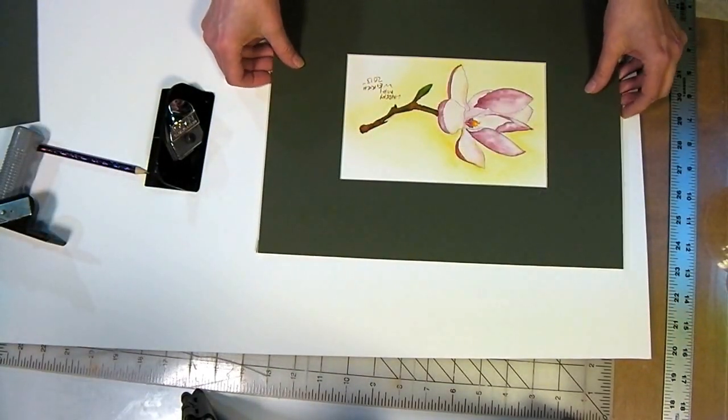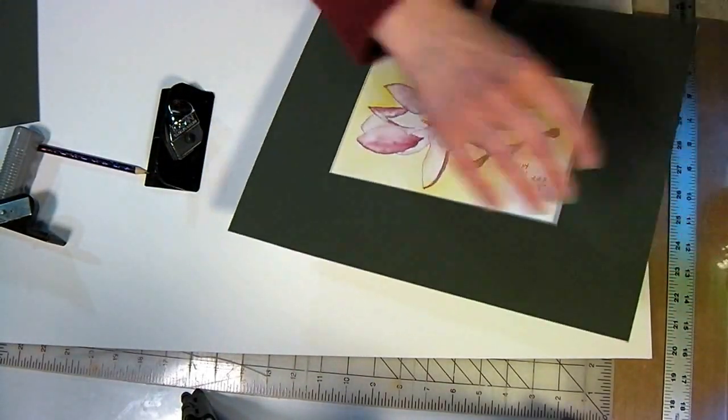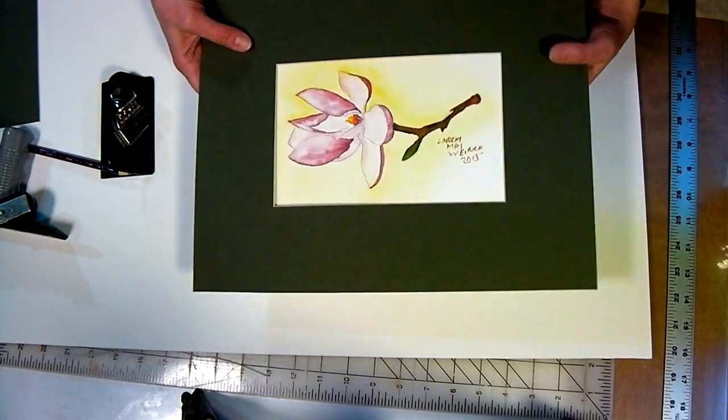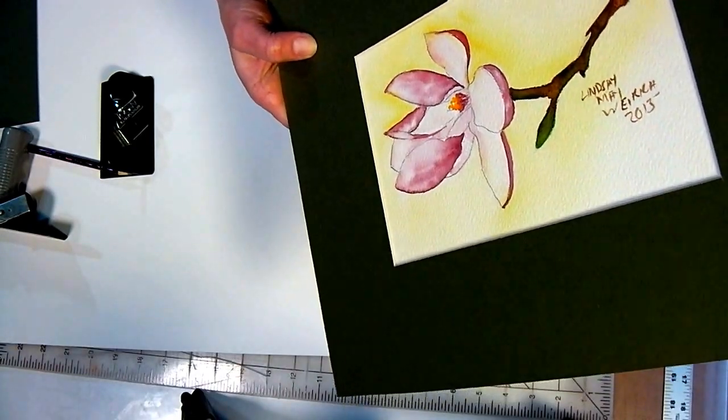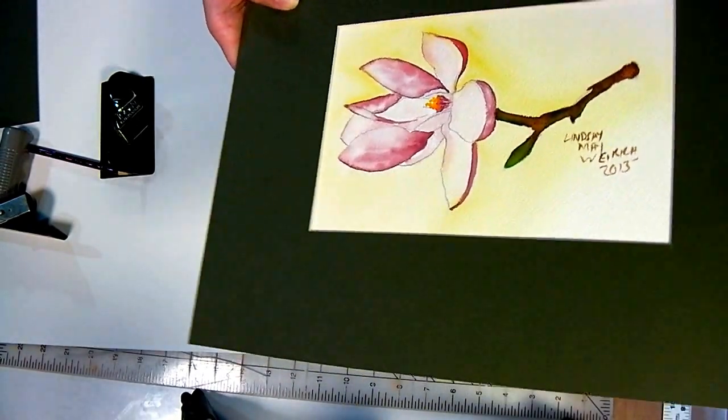So then you can just set your mat on your picture and see how it looks. So you've got that really nice beveled edge and kind of hold it to the light. Hopefully you can see that nice white bevel. It would show up a little bit better on a darker painting.